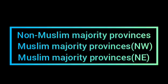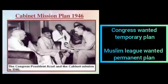The provinces were divided into three groups: first, non-Muslim majority provinces; second, Muslim majority provinces in the north-west; and third, Muslim majority provinces in the north-east. A Constituent Assembly was to be elected, and an interim government was set up with representation given to all communities. Both the Congress and the Muslim League accepted the plan.